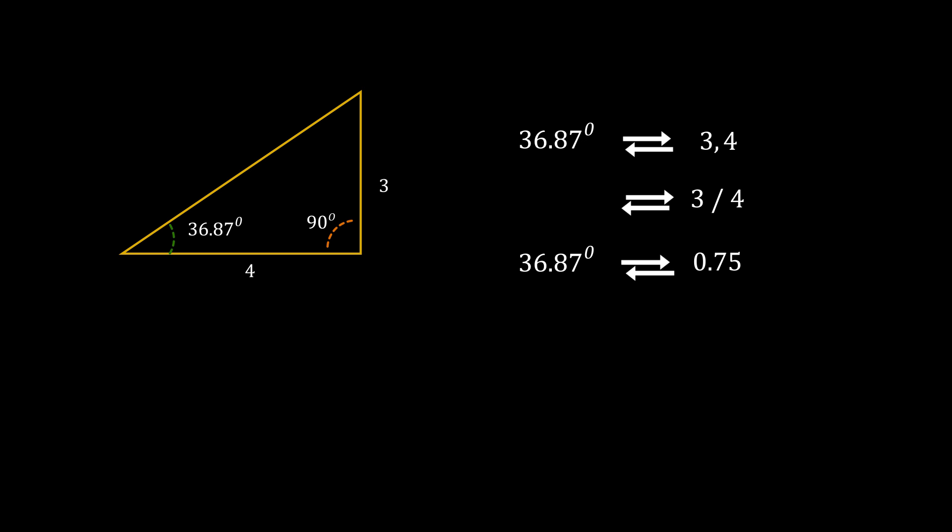If the ratio is constant, let's say if 3 by 4 is 0.75, then this relationship is kind of constant. Mathematicians give this relationship a name: tangent. They call this tan θ. So tan of 36.87 is 0.75, and you all know 0.75 is opposite side divided by adjacent side.